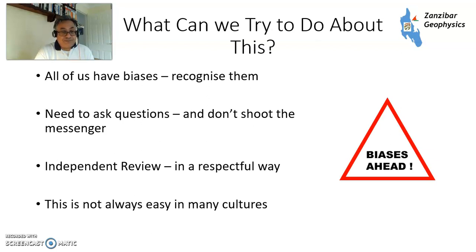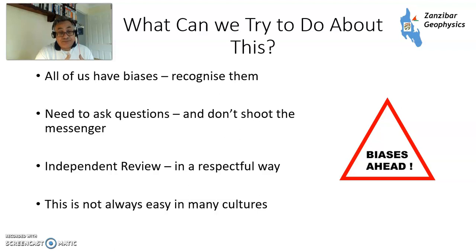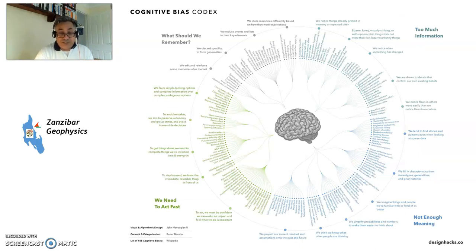So what can we do about this? First thing: all of us have biases — you need to accept that, and we need to recognize them. They're difficult things to deal with, but at least if you admit that you've got a potential problem, you might try to solve it. Ask questions and don't shoot the messenger. Get more people to look at your stuff and do independent review in a respectful way — this can be quite challenging in many cultures. The start of solving a problem is recognizing that there is a problem. So biases ahead — look for that. This was posted on Visual Capitalist, the website, looking at all the different biases. So thank you very much. If you enjoyed this video, please like and subscribe, and I look forward to seeing you on the next one.